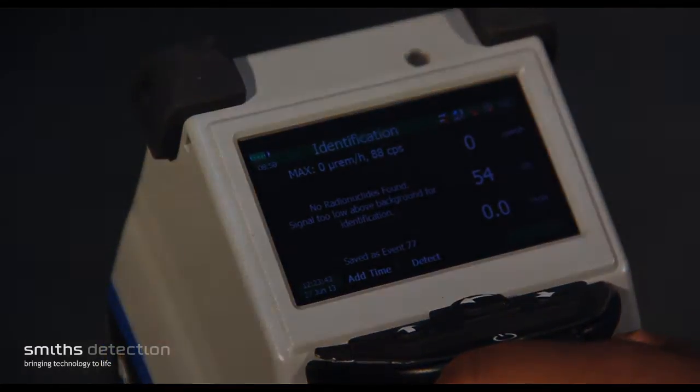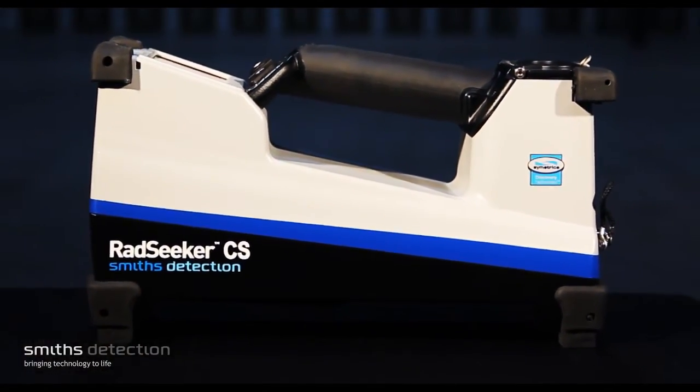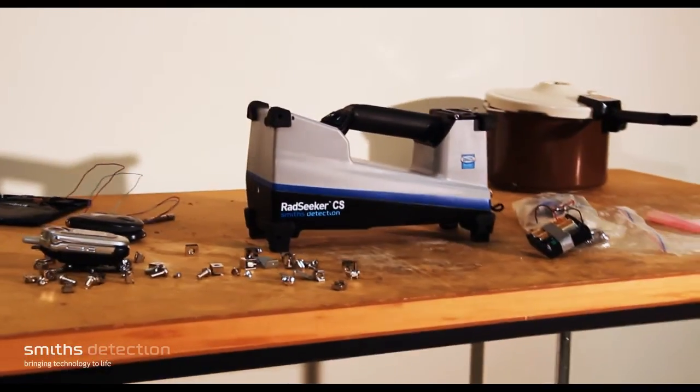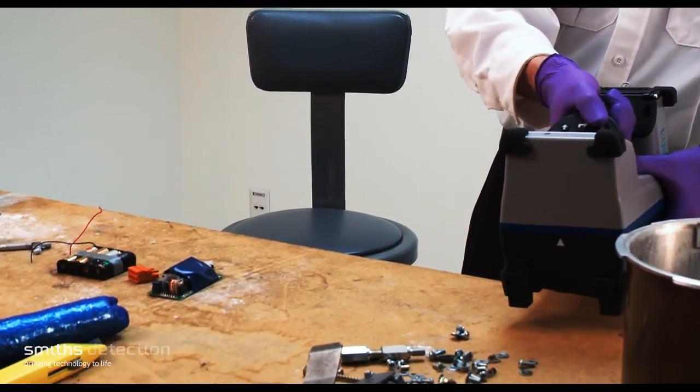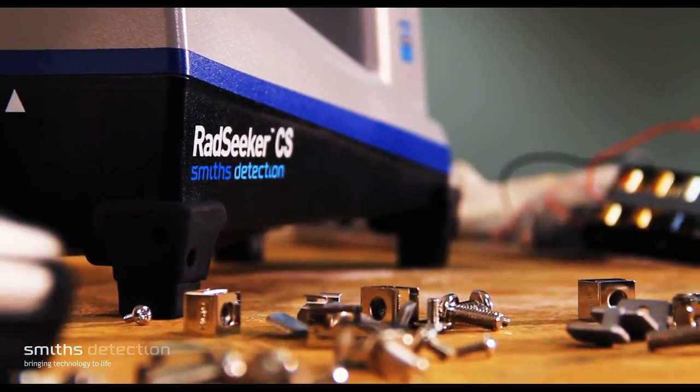The RadSeeker is designed to meet or exceed all ANSI N4234 requirements. It was specifically designed to meet the Department of Homeland Security mission requirements for a next-generation system capable of detecting and identifying nuclear threat materials.